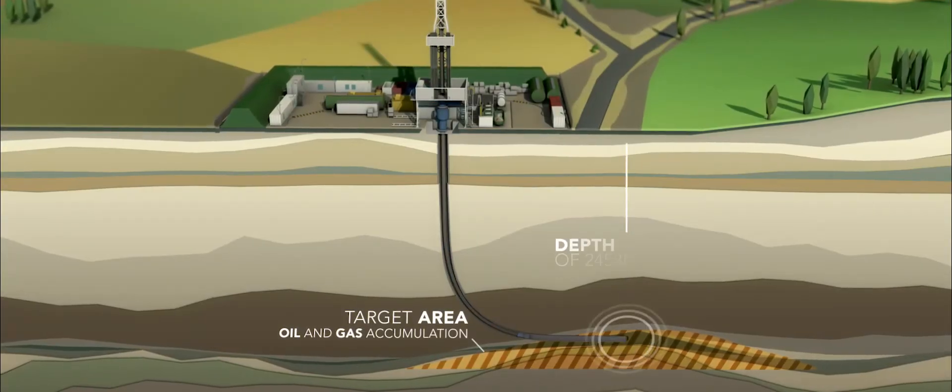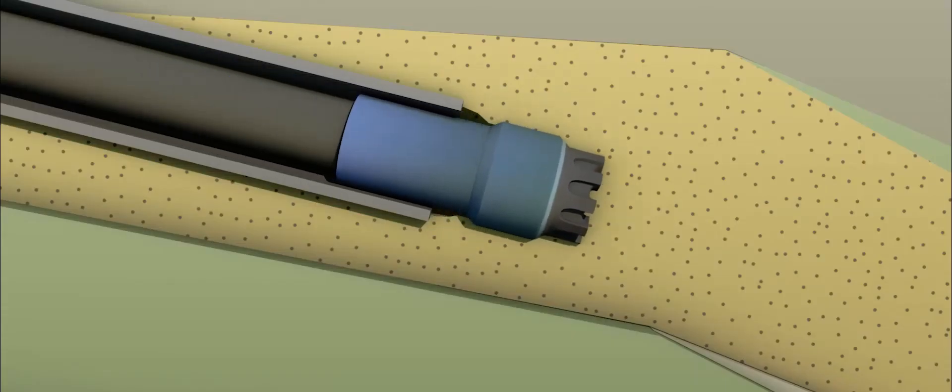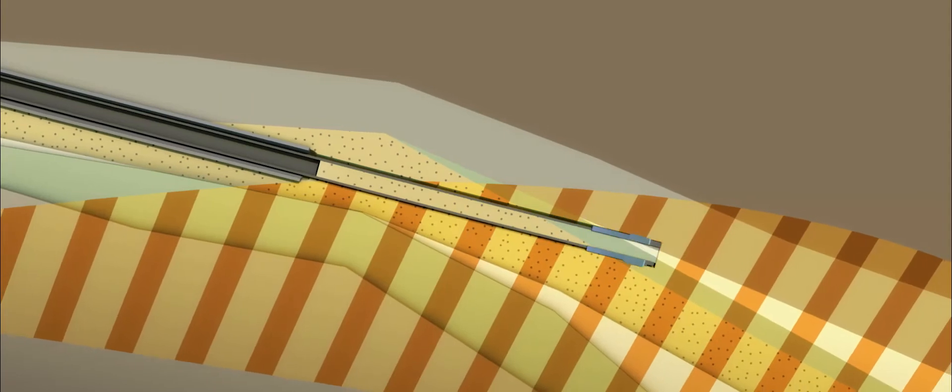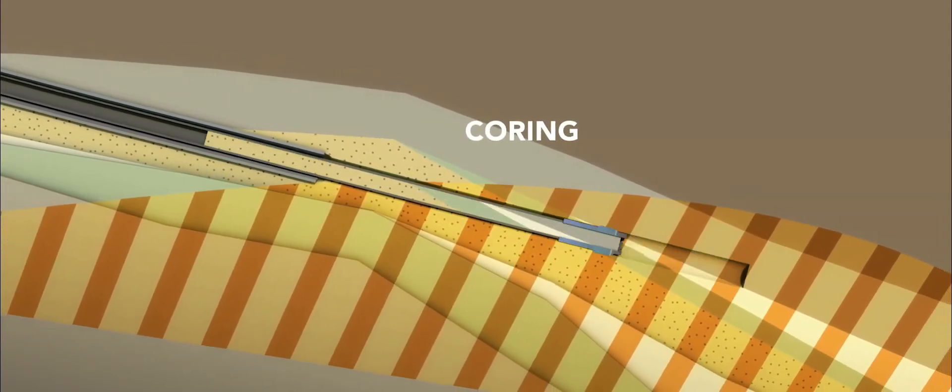Once the well is drilled to the target depth, a rock sample of several tens of meters in length is removed and analyzed in order to determine the presence of hydrocarbons. We call this process coring.